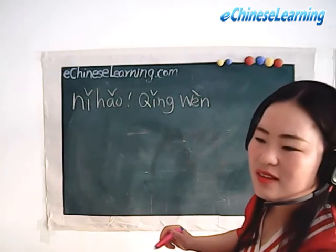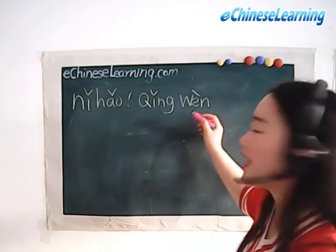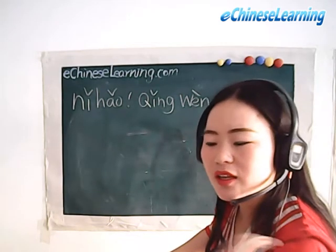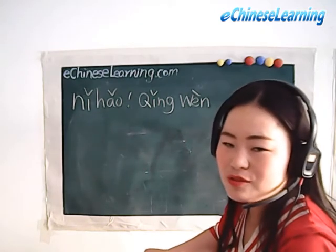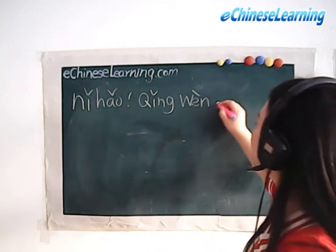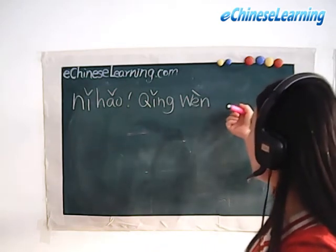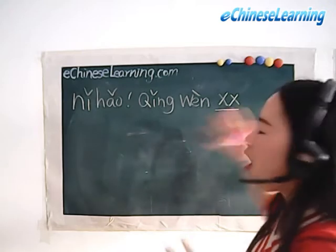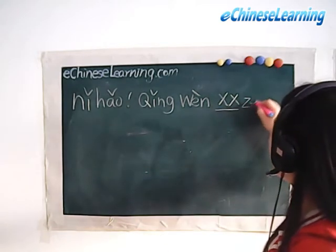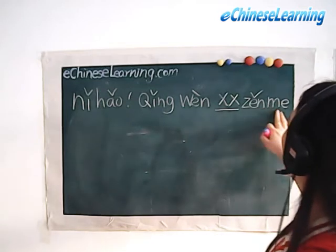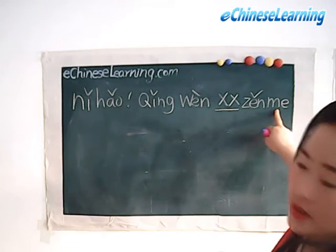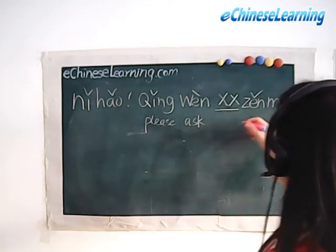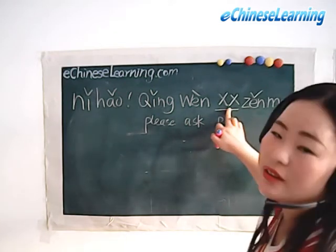The second word is 'wen,' which means 'ask.' For example, someone asked me just now — she 'wen' me — how to get somewhere. It's like 'excuse me, may I ask.' So 'qing wen' together means 'excuse me' or 'may I ask.' Then you put a place word here — someplace — and ask how to get there. This is basically 'please ask' followed by a place word.